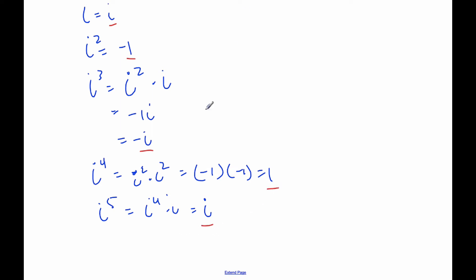If I would go i to the sixth, well, you know that's i to the fourth times i squared, and so that's going to, this is one, and so I get i squared was negative one.